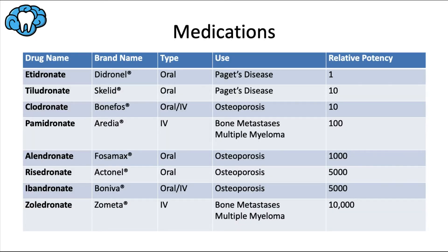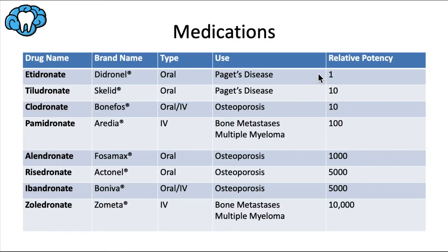Here's a chart listing the most commonly prescribed bisphosphonates. From left to right we have the drug name, the brand name, how it's administered — either by mouth or intravascularly — which condition that particular bisphosphonate is usually prescribed for, and finally the relative potency, going from least potent with etidronate to most potent with zoledronate, which is 10,000 times more potent than etidronate.